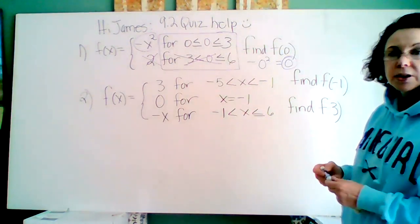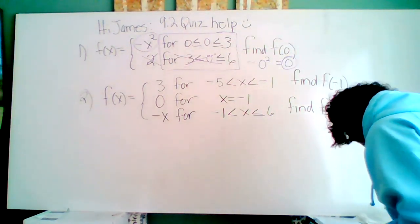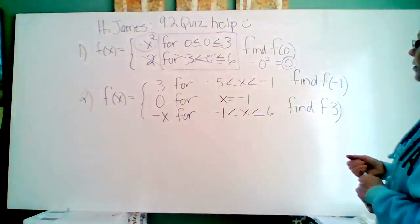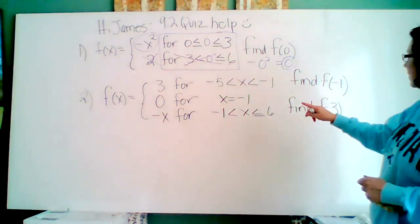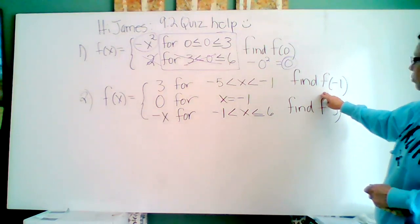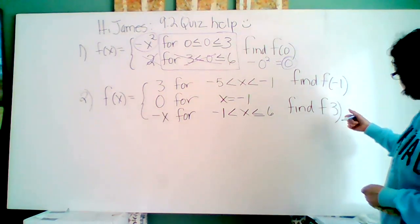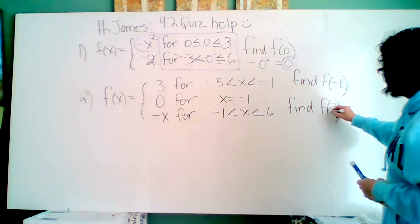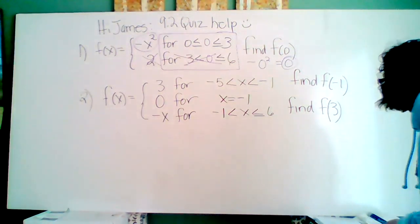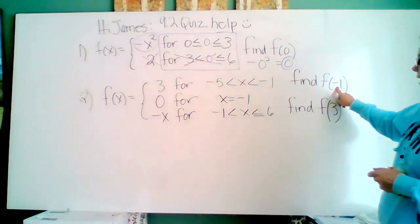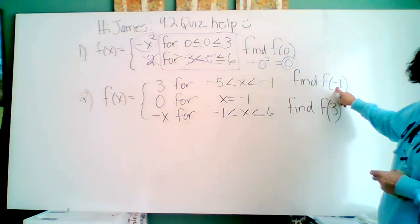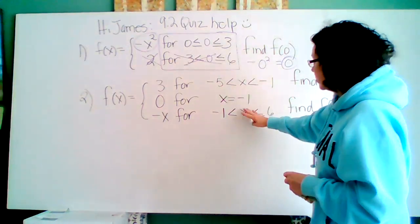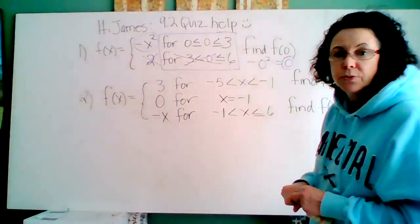Let's look at this next function. This next function has three pieces and they first want us to find the answer when f is a negative one and then when f is three. And again, these are x's that they gave us. So let's put in a negative one for x first in these intervals to see which function we use.